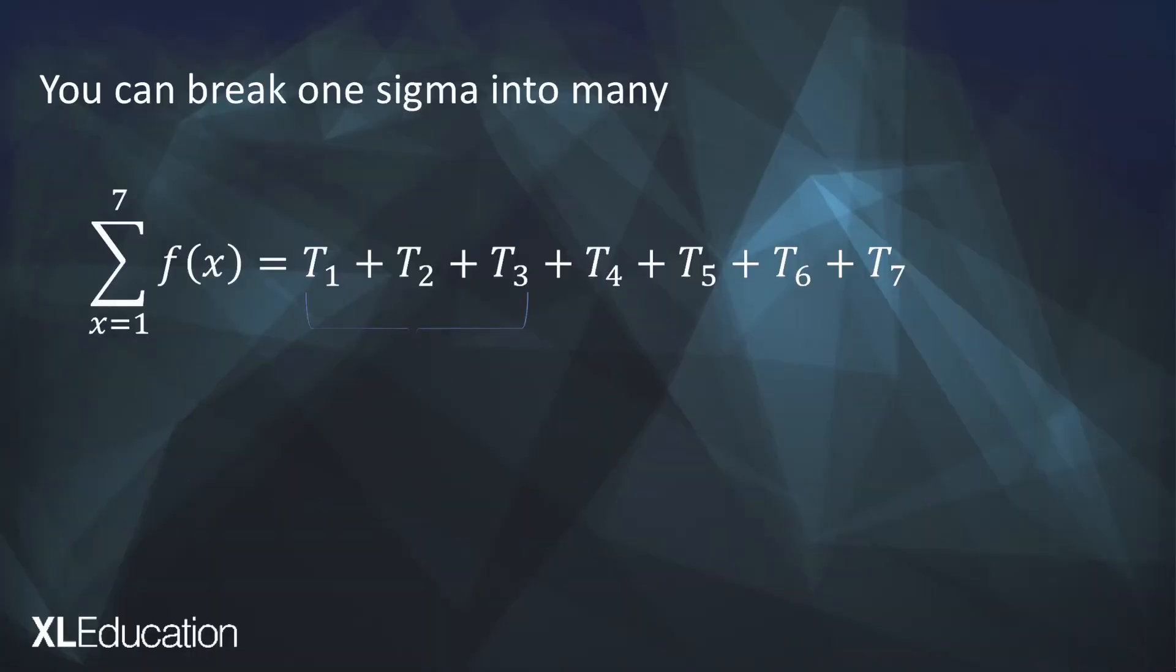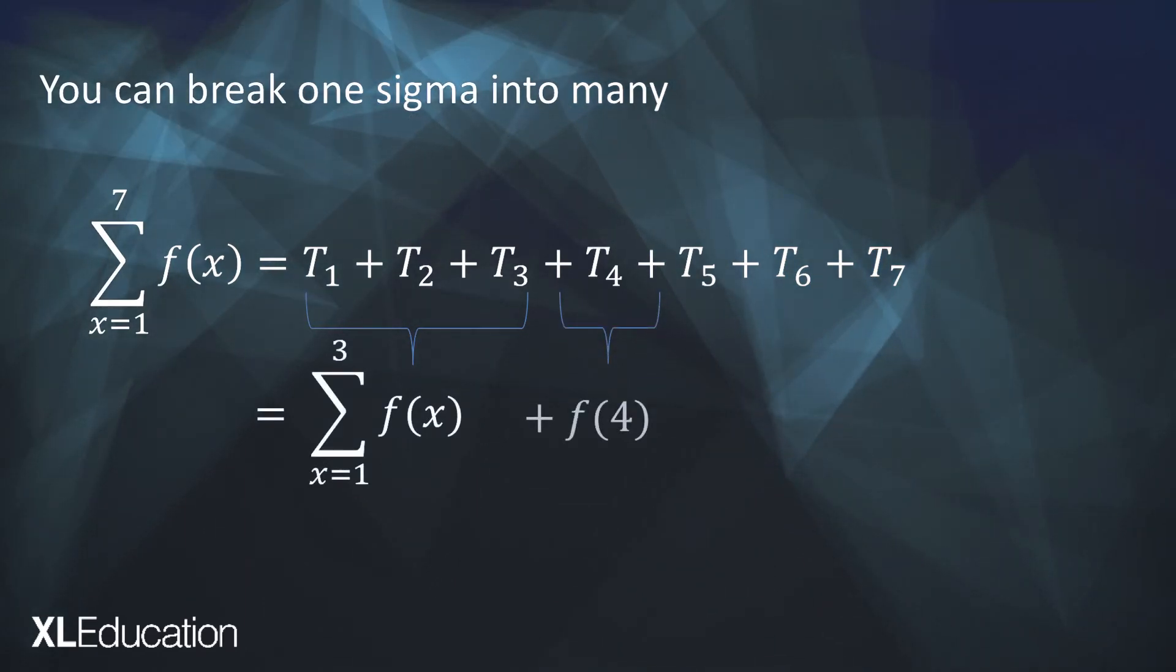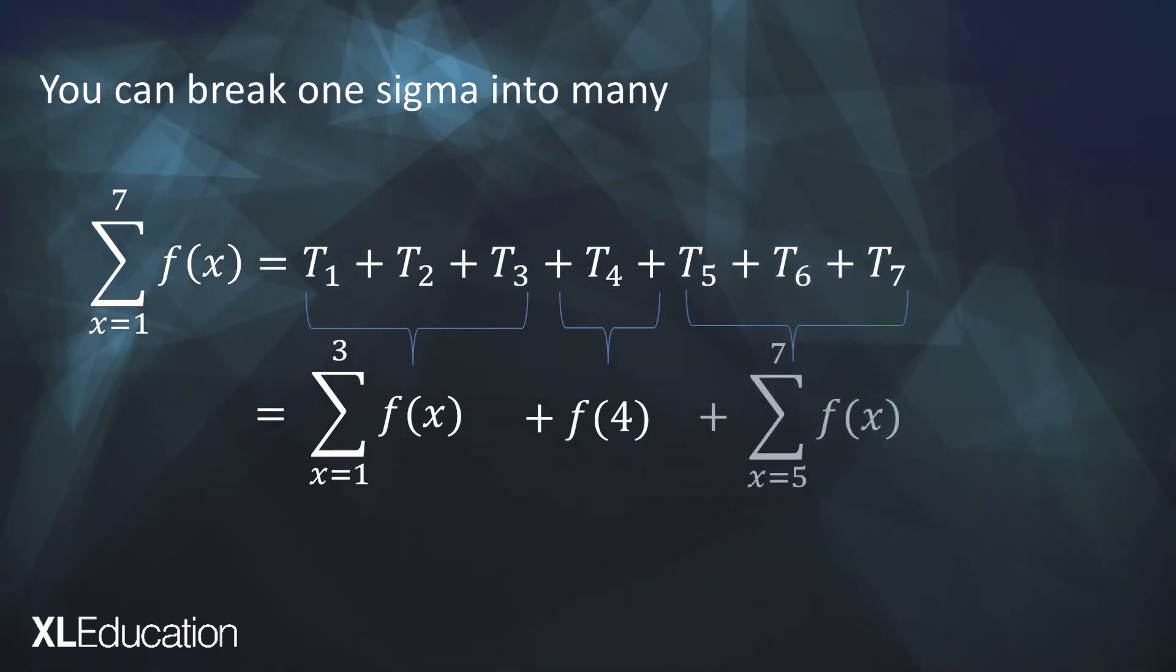So that term 1, term 2, term 3 added together we can write as the sigma from x equals 1 to 3 of f of x. That term 4 is just f of 4 and term 5 plus term 6 plus term 7 is the sigma from x equals 5 to 7 of f of x. So there we've taken our first sigma and we've broken it down into different parts.